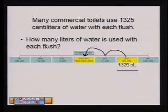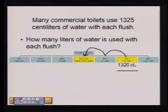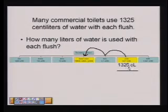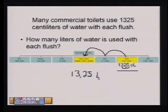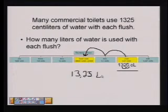Going to the left is the same as dividing. Two places is 100, so we'd be dividing by 100, or multiplying by one one-hundredth. Or we can just take the decimal point and move it two places to the left. This gives us 13.25 liters. So each flush of a toilet is 13.25 liters.